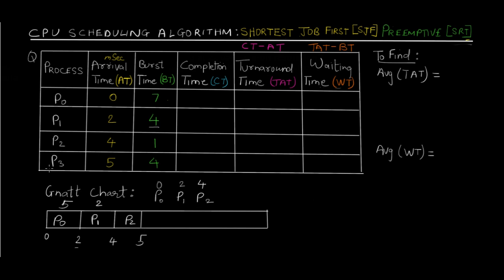At time 5, P3 comes into the picture requiring 4 milliseconds. The CPU now checks which process requires the shortest remaining time. We have P1 requiring 2 milliseconds, P0 requiring 5 milliseconds, and P3 requiring 4 milliseconds. Out of these three, P1 requires the least. So the CPU starts processing P1 for 2 milliseconds — from time 5 to time 7 — and P1 is completely finished.